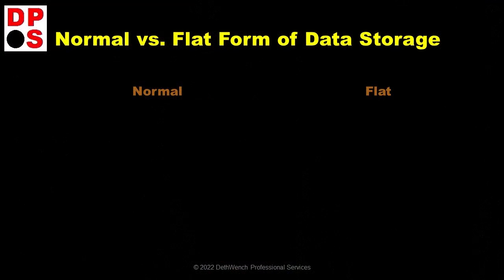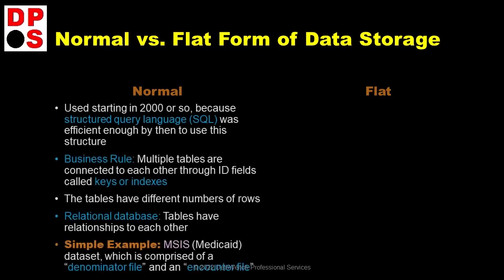Now we get to another basic concept that relates to applications, and that has to do with the structure used to store the data in the backend. There are basically two structures: normal form, which is also called relational, and flat. Since normal form is popular now, let's start by talking about normal form.